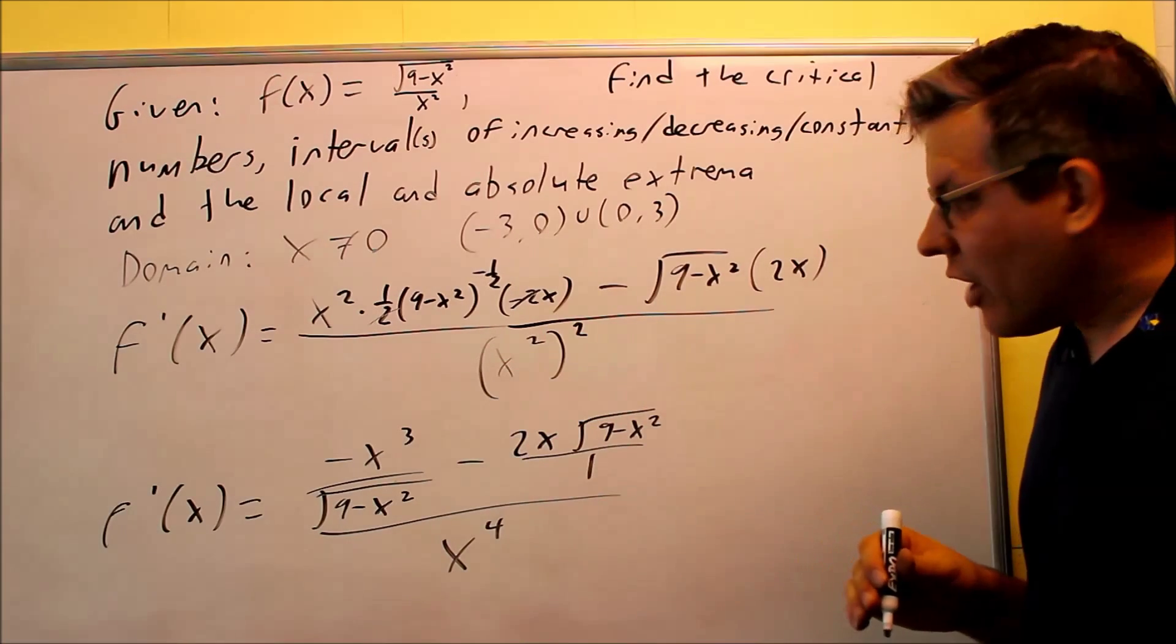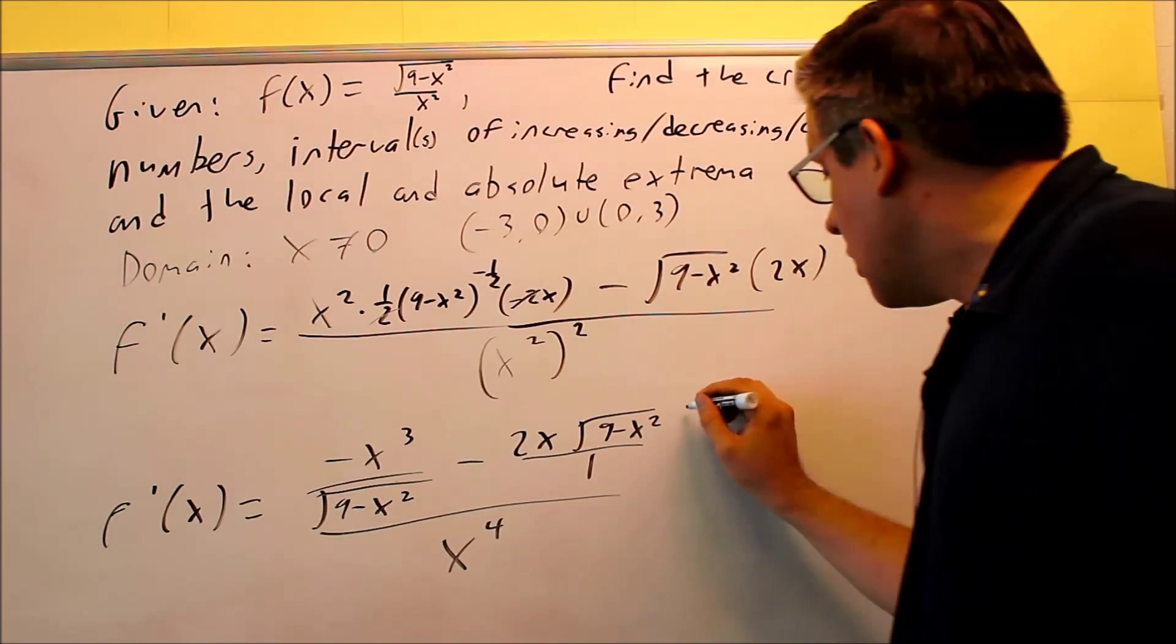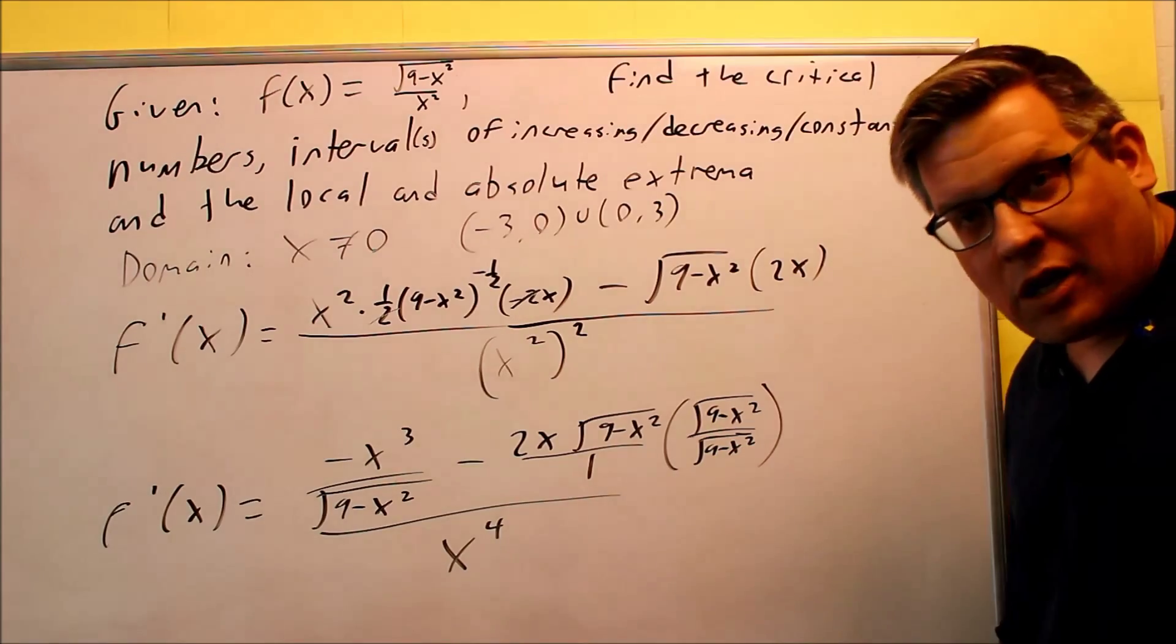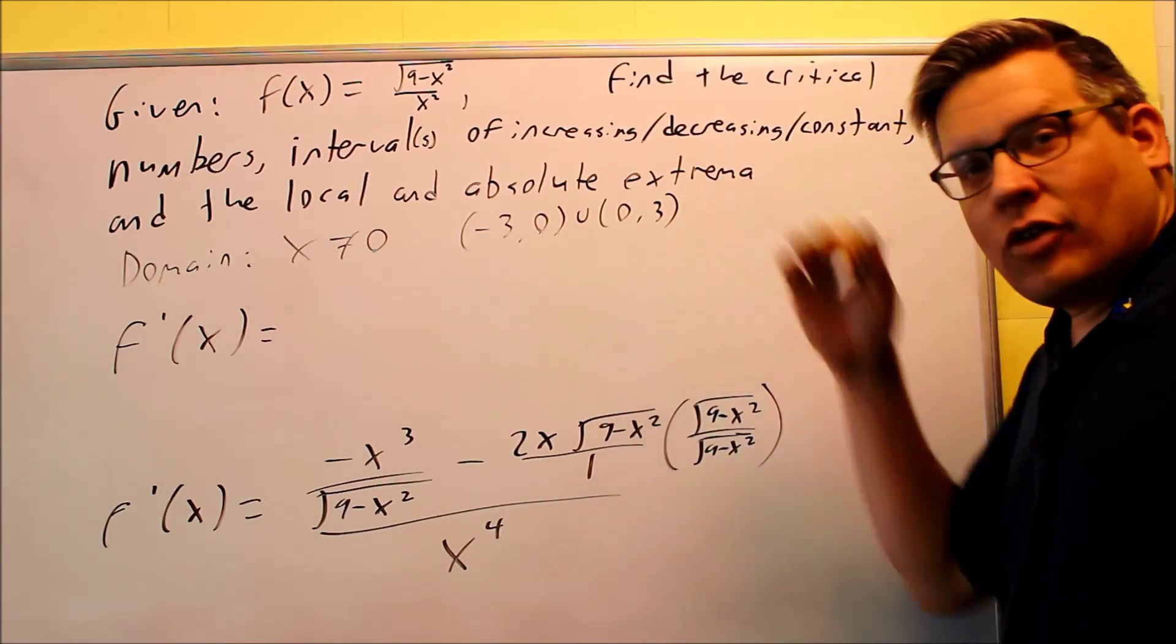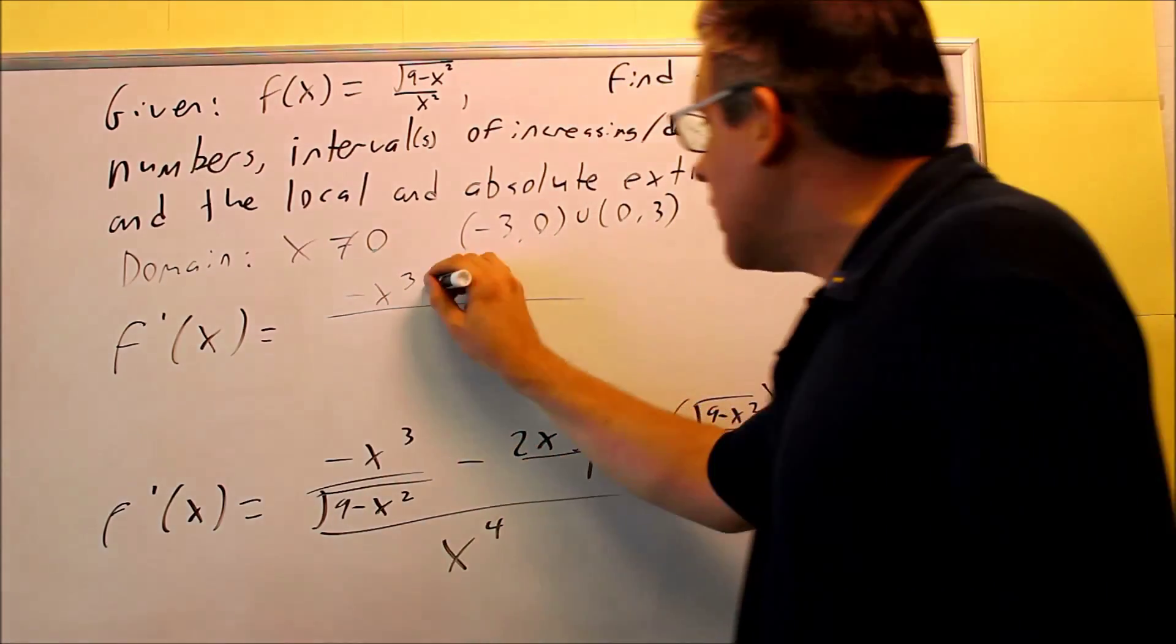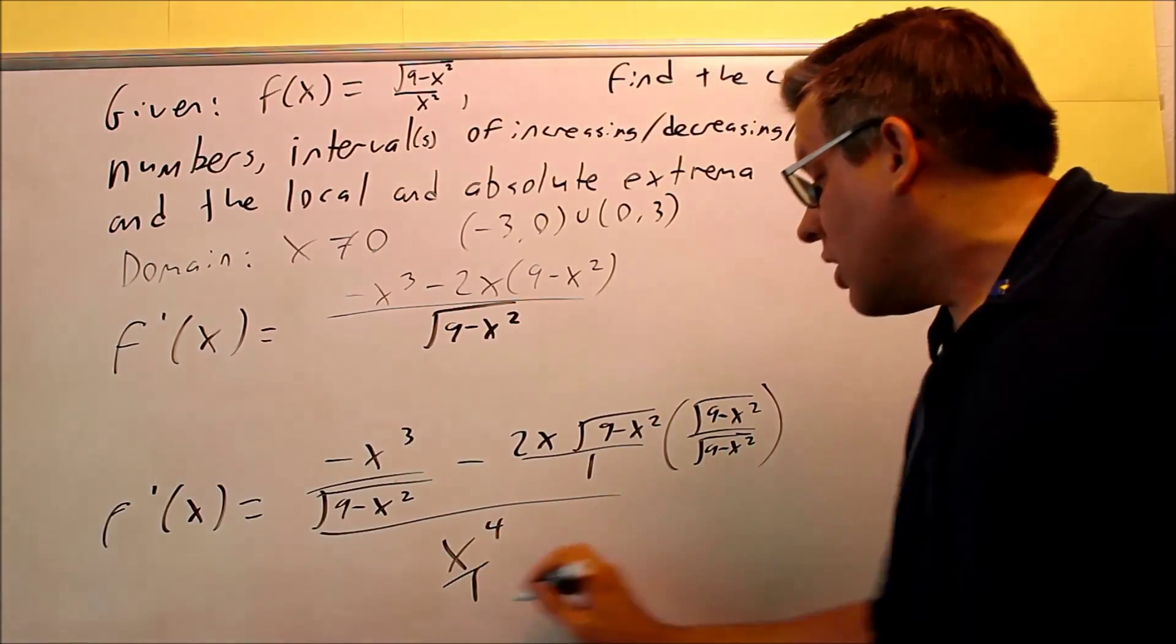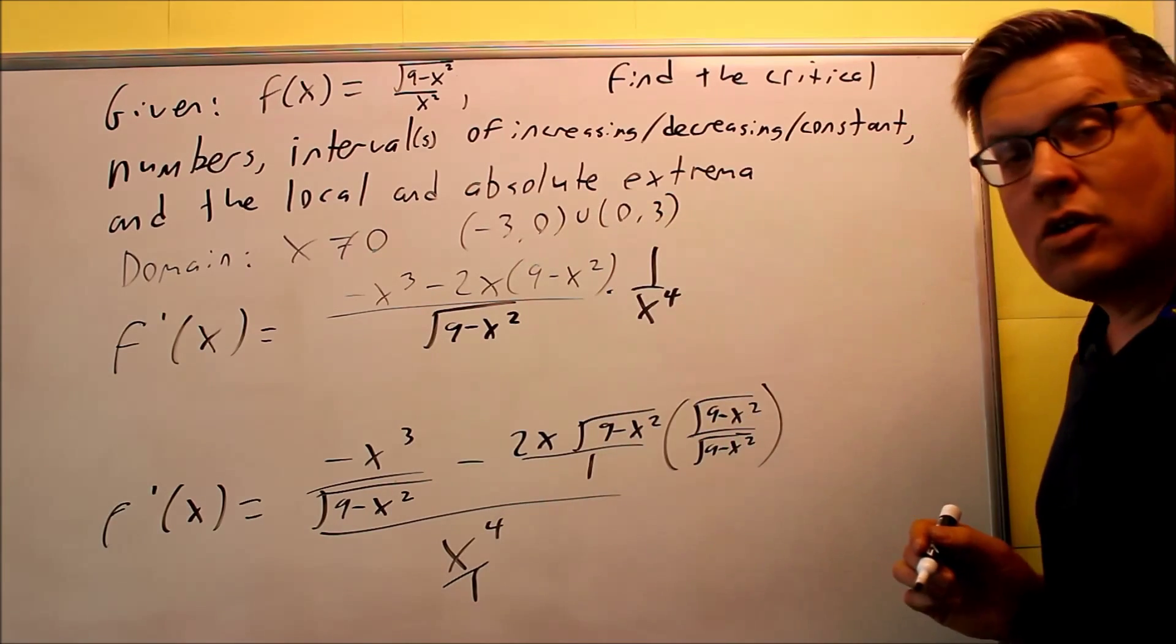Now what you want to do is you want to clear up these complex fractions here. So I need to find a common denominator. I want to get the common denominator of square root of 9 minus x squared. So this one I'm going to multiply by square root of 9 minus x squared, top and bottom. And then that will allow me to get common denominator here. Then I can flip over the fraction on the bottom and I can get one single fraction. You want to get that before you start setting things equal to 0. You want to make sure that you have just one fraction for it. I'm going to get negative x cubed. And then when I multiply this, I get negative 2x. And then this will just be 9 minus x squared because I'm multiplying the two radicals together. And on the bottom, I have the square root of 9 minus x squared. And then this right here, that's the same thing as 1 over x to the 4th. So I'm multiplying by the reciprocal. And that way, at least, I can get a single fraction out of it.